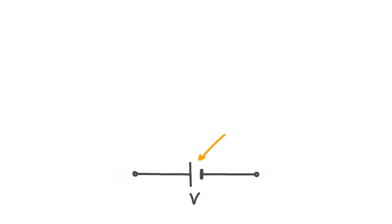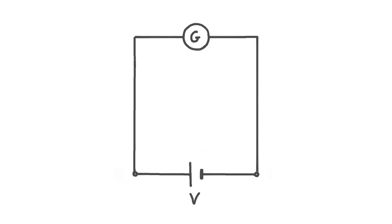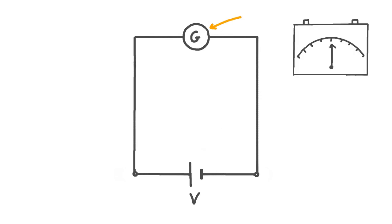To start off with, let's consider a cell, and let's say that this cell has a certain voltage V that we want to measure. A simple way that we can try to do this is to connect a galvanometer in series with the cell. A galvanometer is a device which can measure the magnitude and direction of a current using a needle on a dial. In this circuit, because the cell is applying a voltage to the galvanometer, this produces a current, which we can call I.